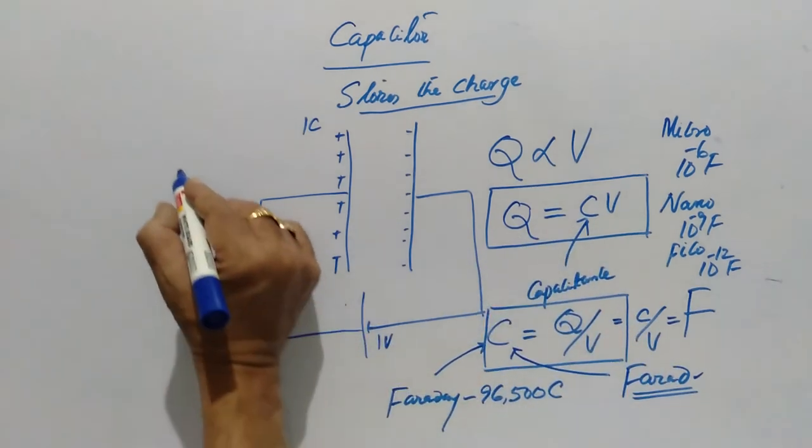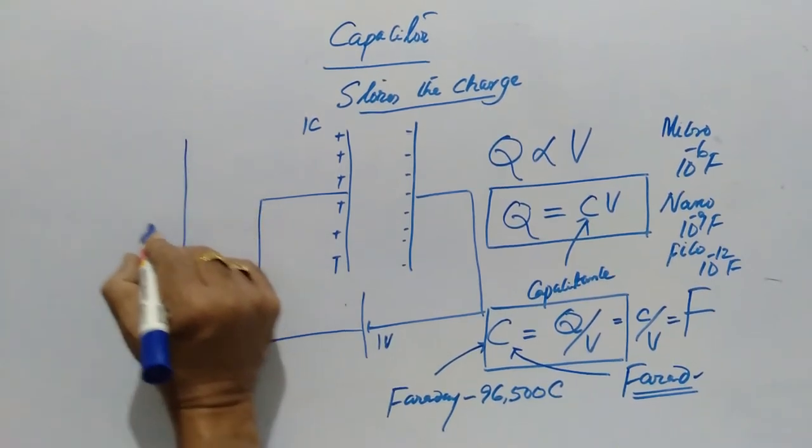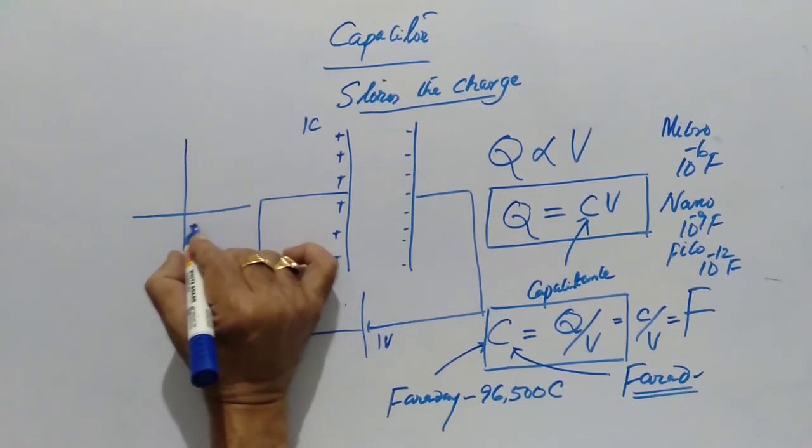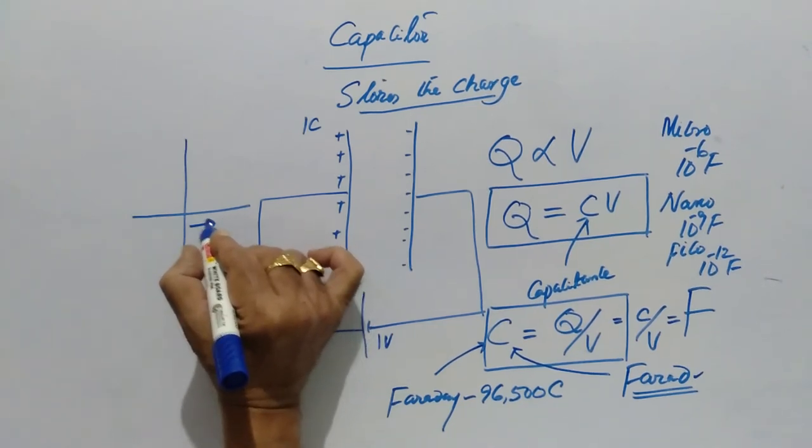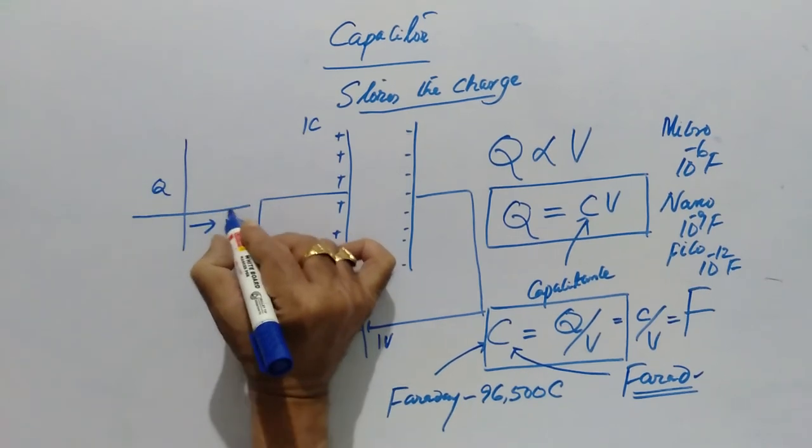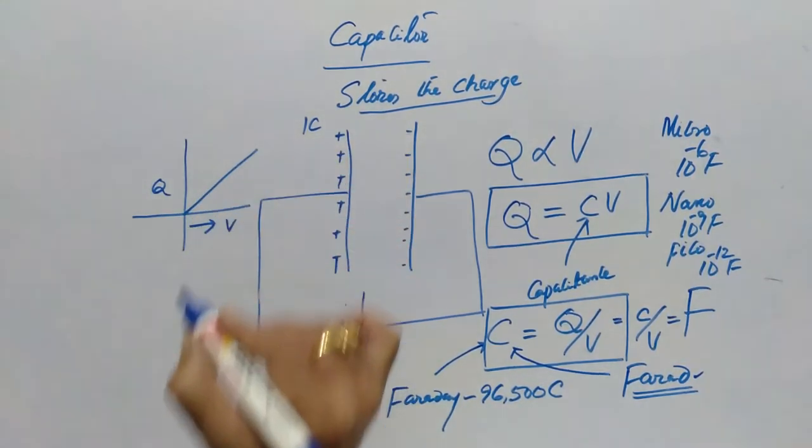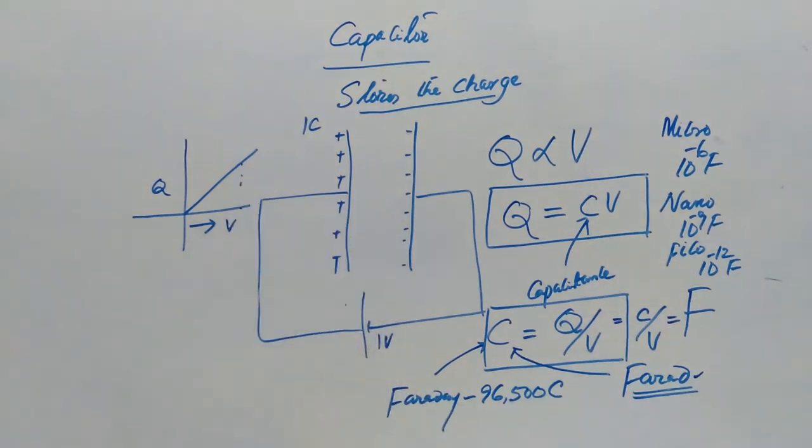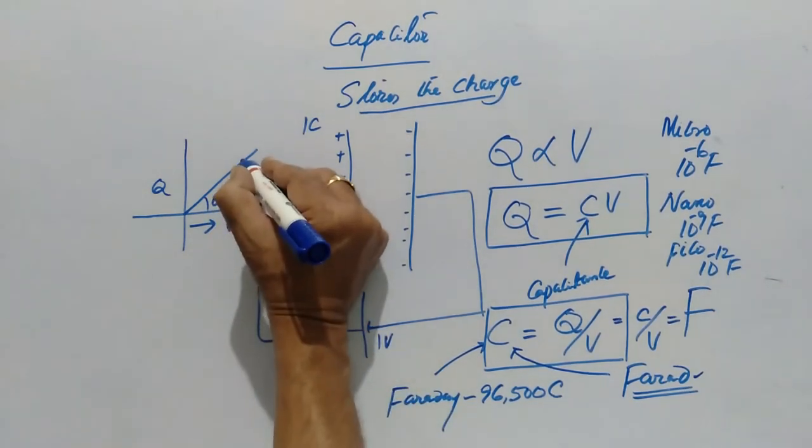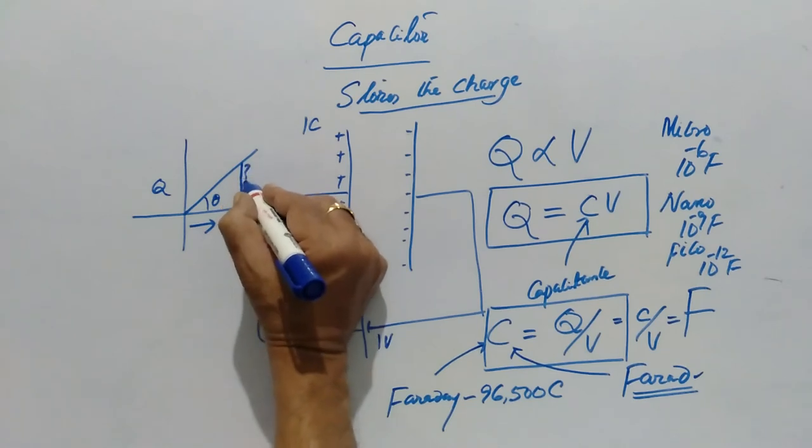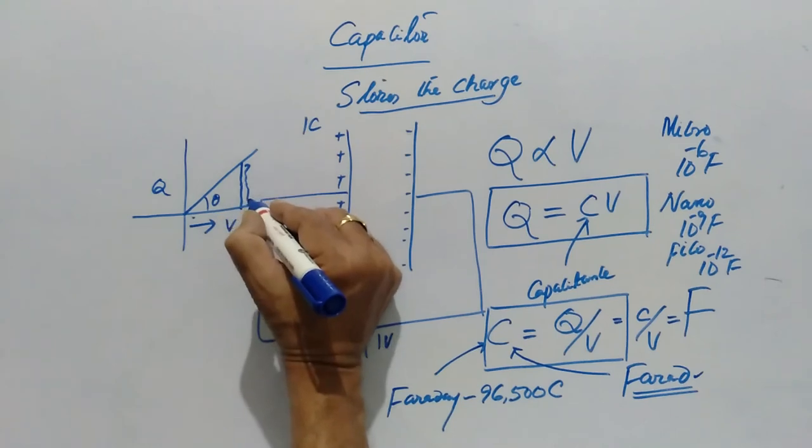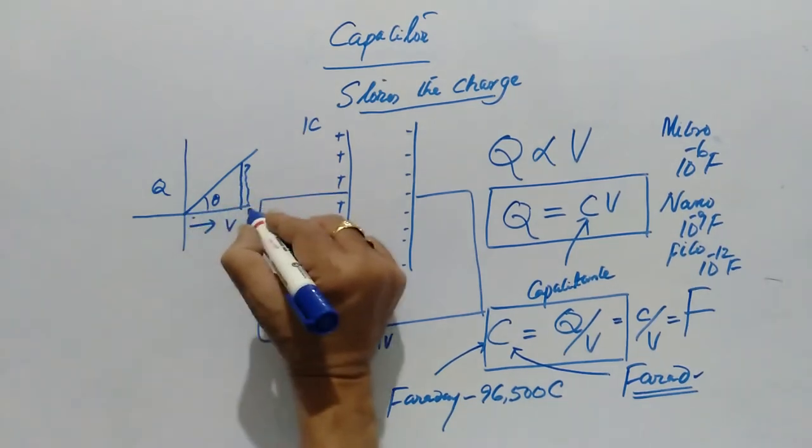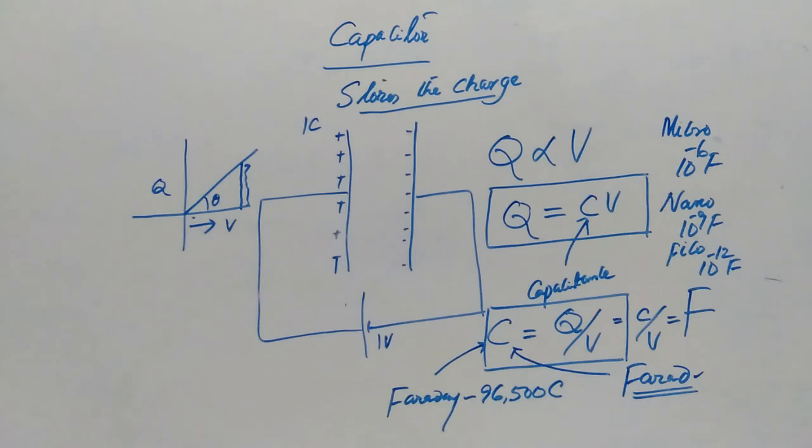So suppose Q is equal to CV is the equation. Suppose if you draw a graph between Q versus V, you will get a straight line and this slope, that is tan theta, will give us the perpendicular by base which is Q, the difference in Q by difference in potential difference, which gives us the value of capacitance.